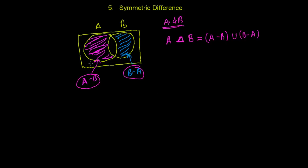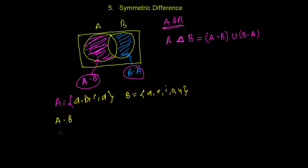Let's take an example. Suppose set A is {A, B, C, D} and set B is {A, E, I, O, U}. I need to first write A difference B and B difference A. A difference B means elements found in A but not in B. A is found in both, so I won't take it. B, C, and D are in A only but not in B. So A difference B is {B, C, D}.